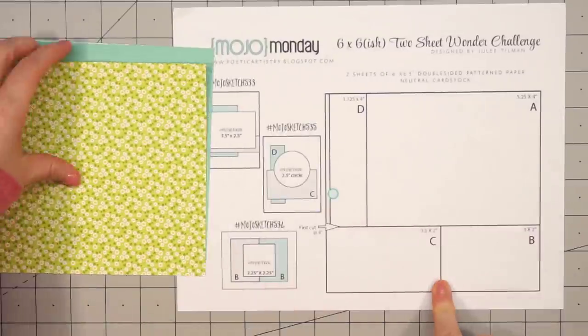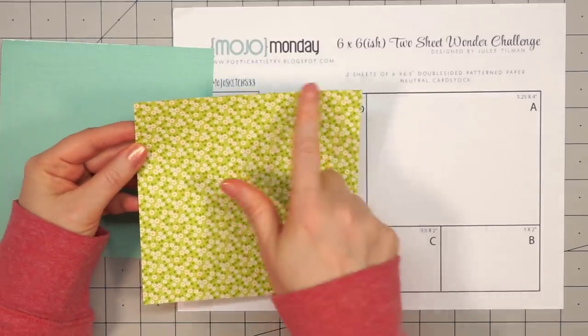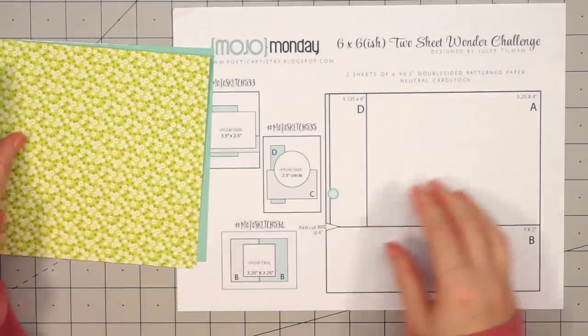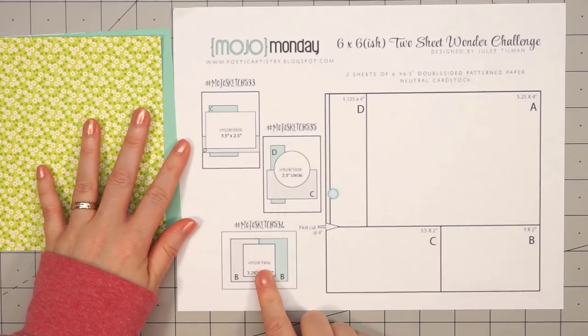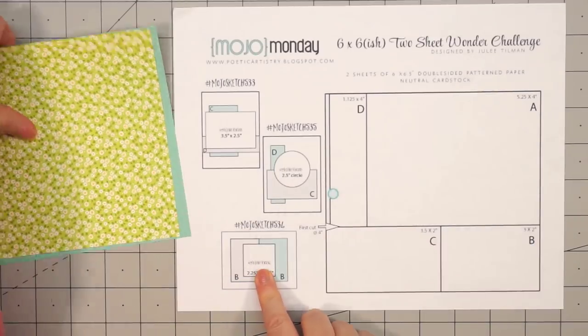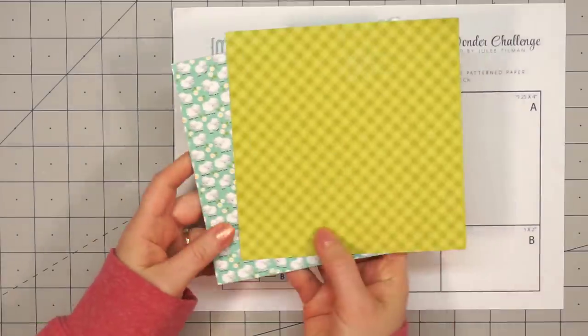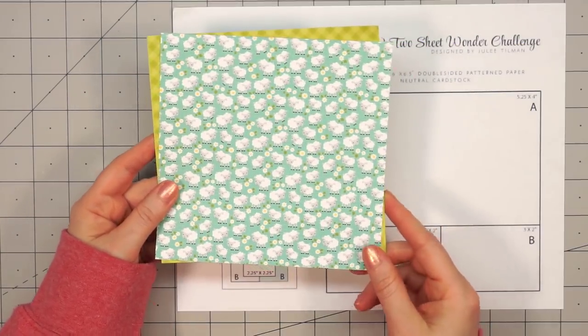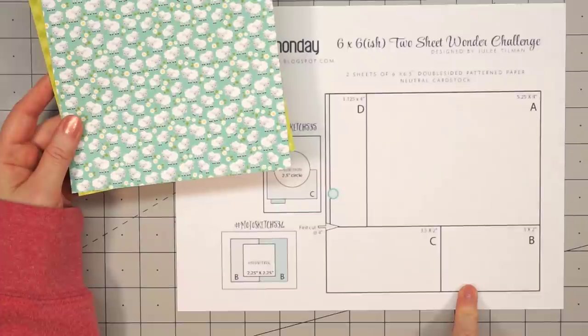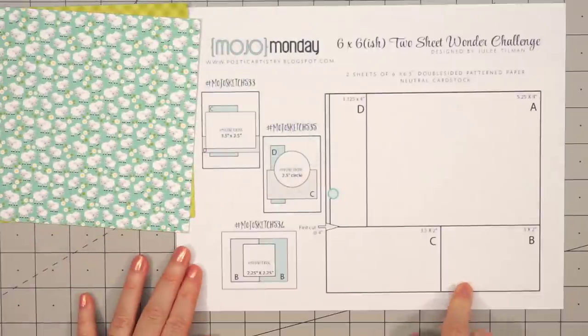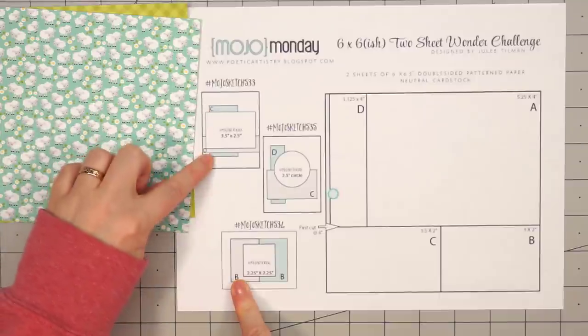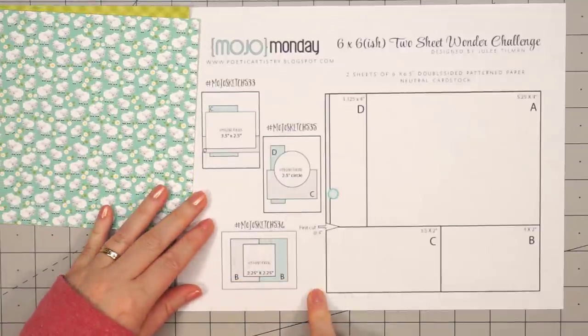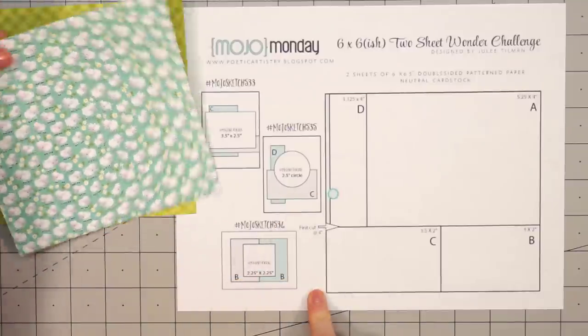Here is the design. The idea is to cut all of these pieces into the specific sizes on the paper. This challenge is designed for six by six and a half inch sheets, so a few pieces will be a little bit shorter since this is actually six by six paper. After we cut all these pieces, we'll assemble the three sketches that coordinate with this challenge.